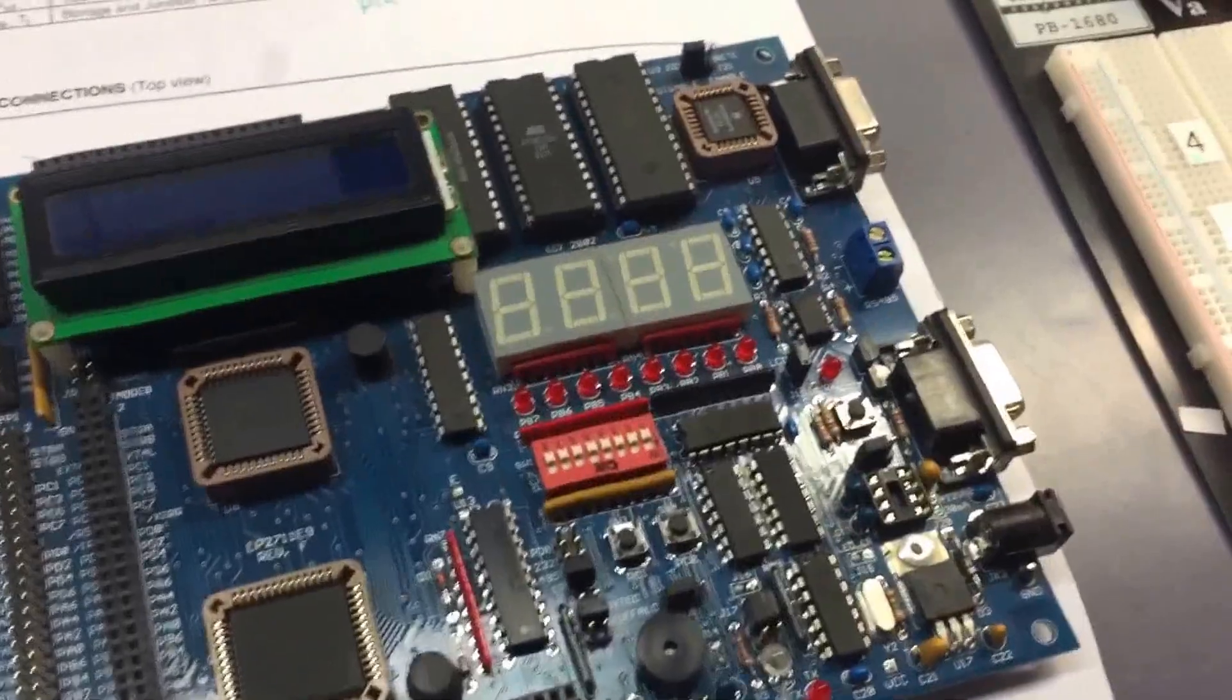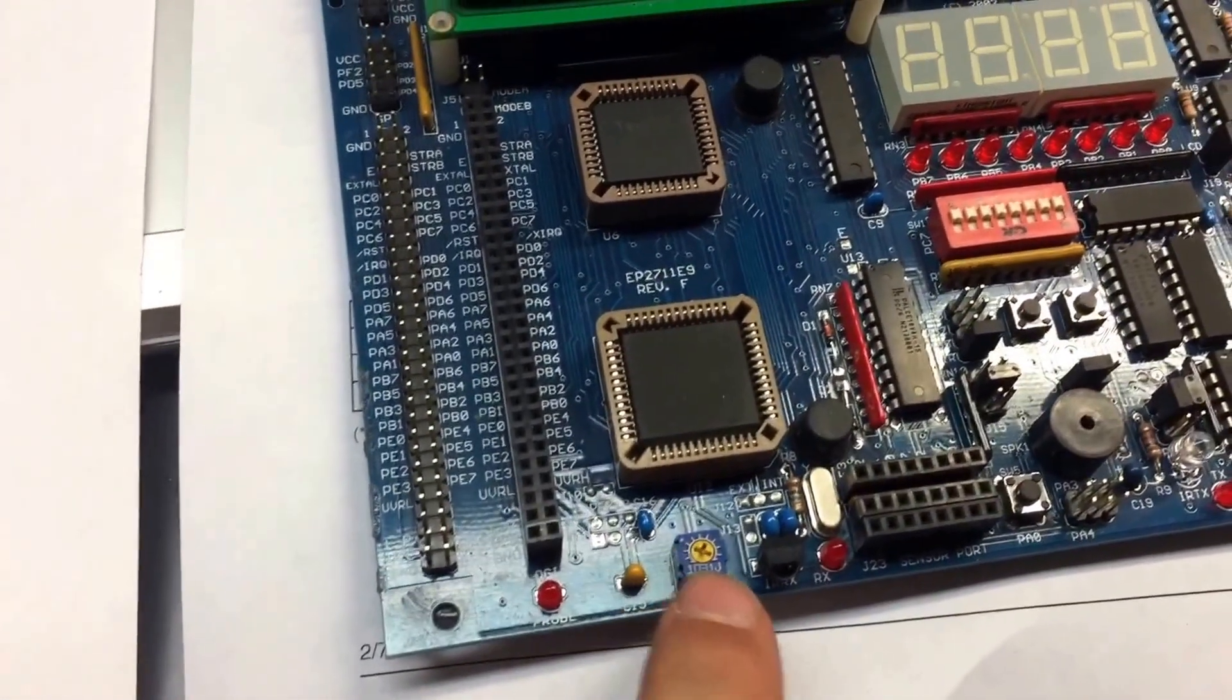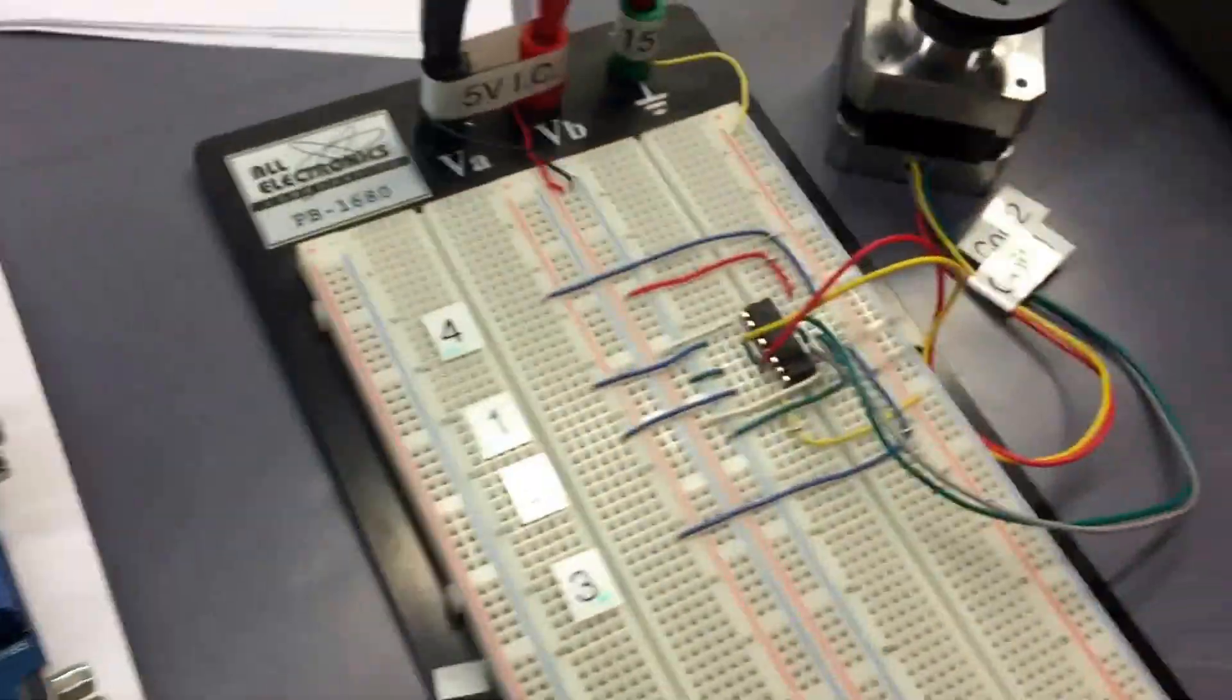And also use a button to program this so it'll change at different rates. And I've also got a potentiometer here so I'm going to connect this to my code which will, when I turn this, it will rotate slower or faster depending on how I want.